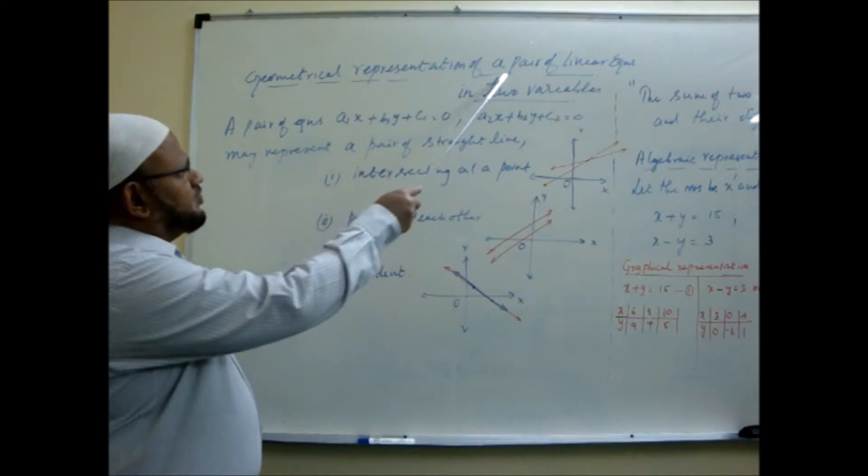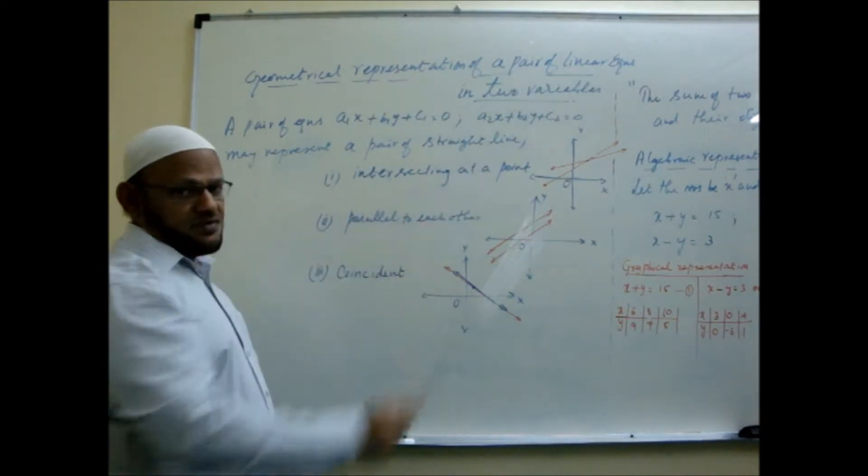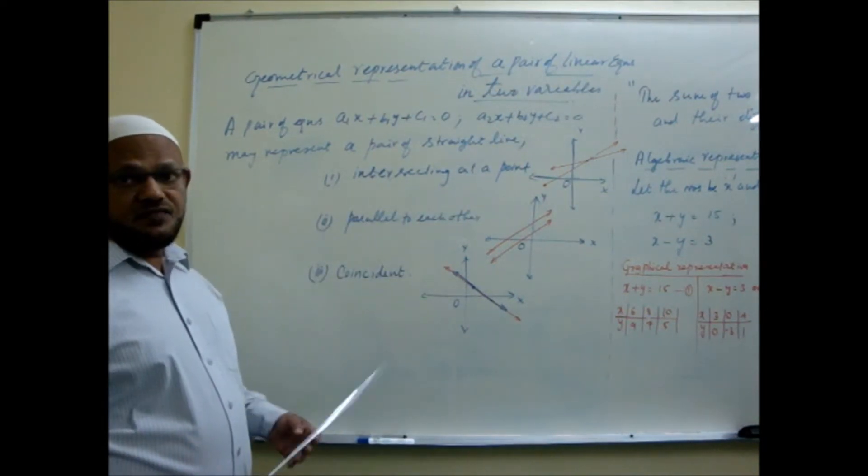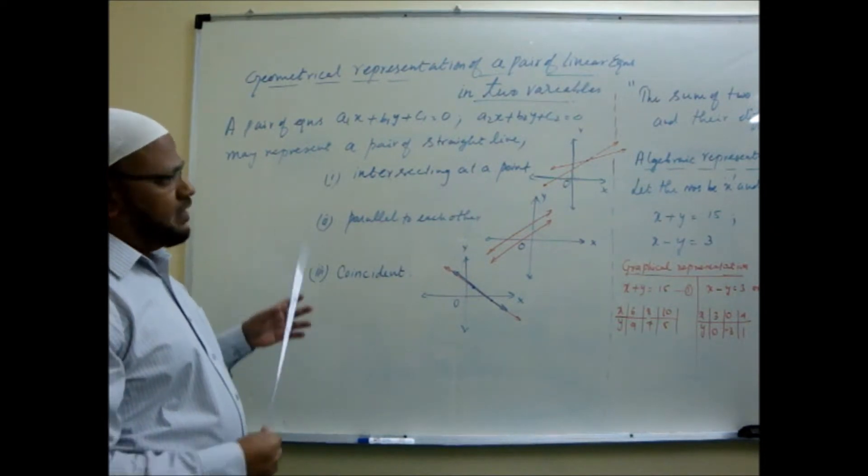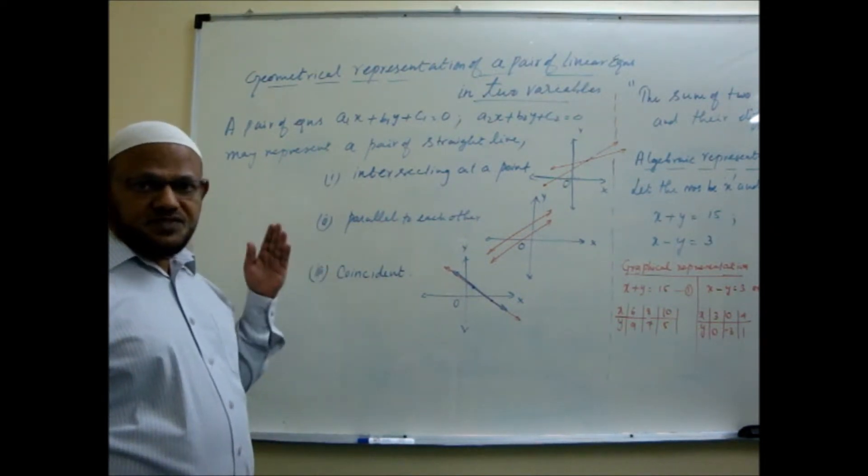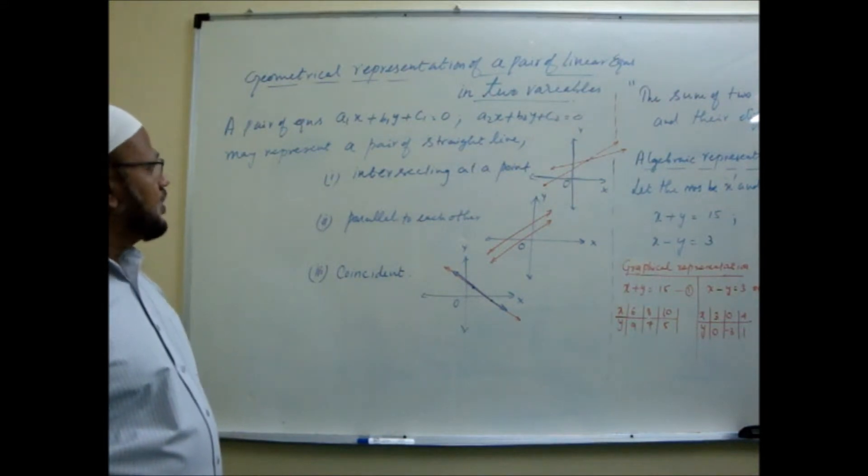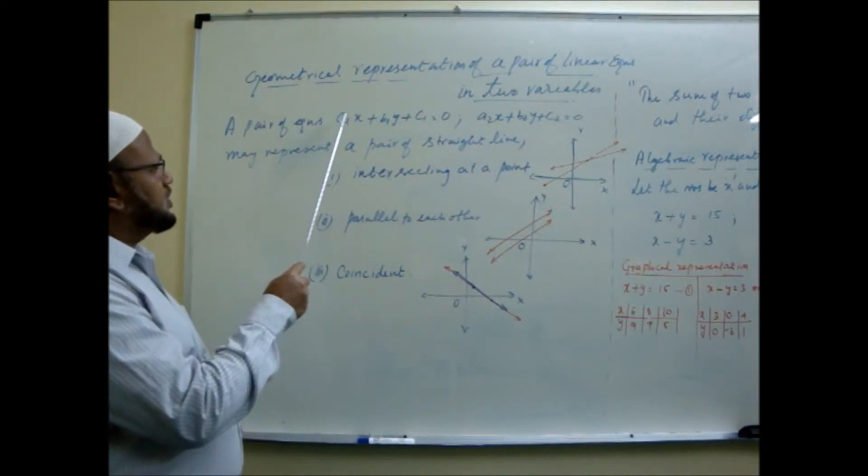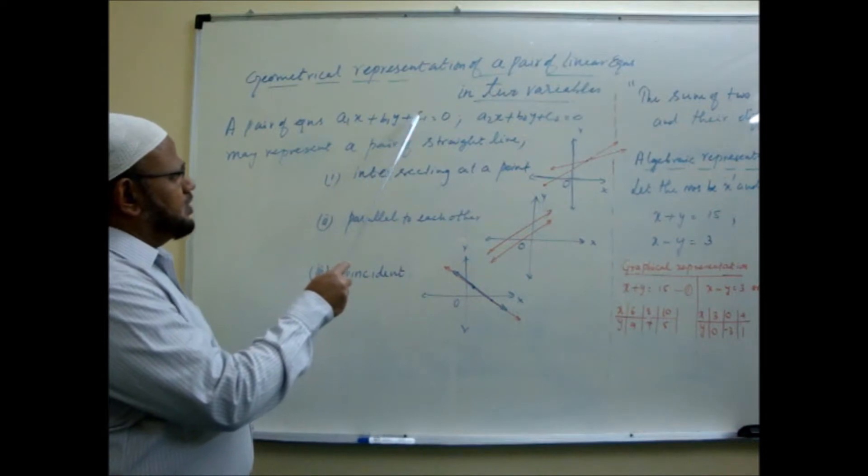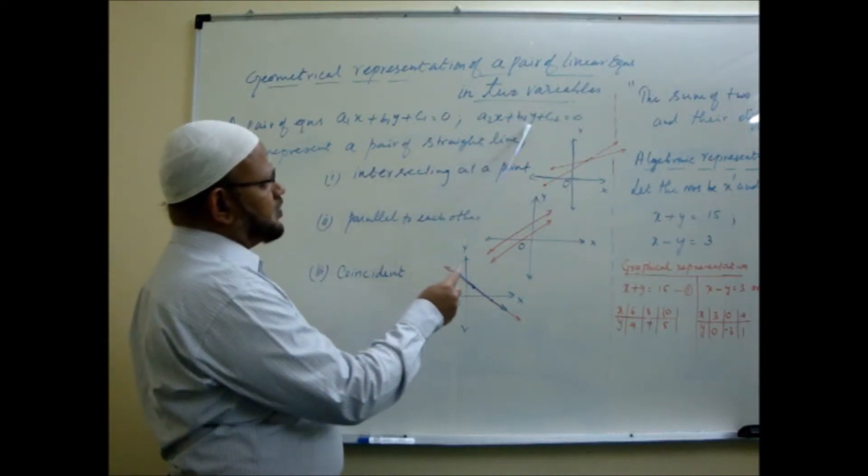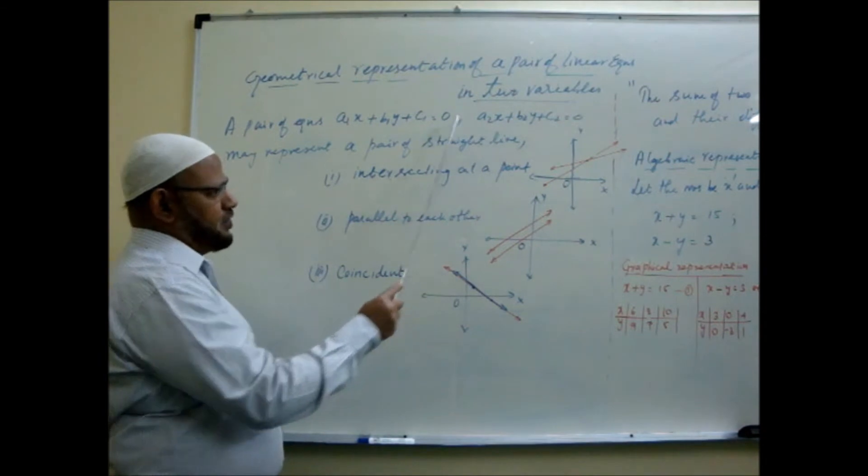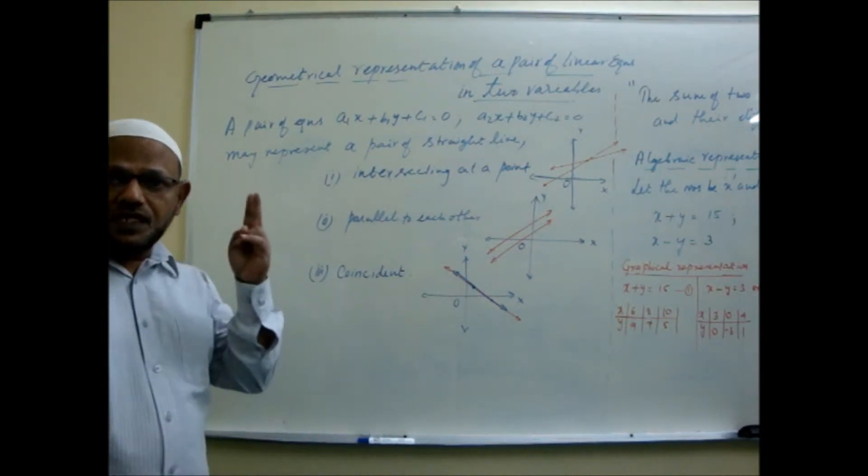Geometrical representation of pairs of linear equations in two variables. In the last class, I told you that these linear equations represent lines on the graph sheet. So now, a pair of linear equations a1x plus b1y plus c1 equal to 0, a2x plus b2y plus c2 equal to 0, one pair of equations means two straight lines.